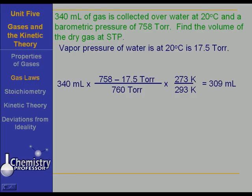And when we work this out, I came out with 309 milliliters of gas. So we significantly reduced the volume of that gas, but that 309 milliliters now is dry and it's at STP.